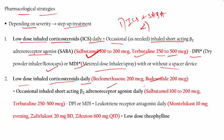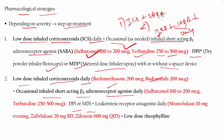Step 2 is low-dose ICS daily — beclomethasone 200 mcg or budesonide 200 mcg — plus occasional inhaled SABA given daily via DPI or MDI, along with a leukotriene receptor antagonist (LTRA). Examples include montelukast 10 mg (generally preferred in the evening) and zafirlukast 20 mg twice daily.